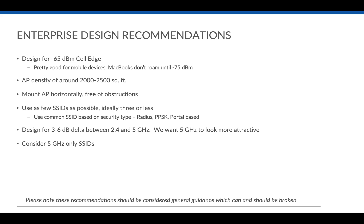Wherever possible, the thumb rule is to go with 5 GHz only. Some customers may be reluctant to turn off 2.4 because they have devices that only support it — that's understandable. Before deploying 5 GHz only, probe the customer and understand what devices are on the network. If there are 2.4 GHz-only devices, enable both bands. For corporate and guest networks, go 5 GHz only if the customer permits.